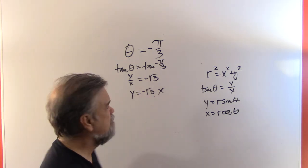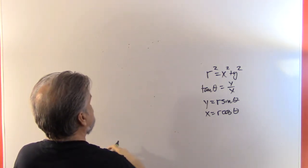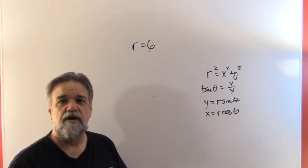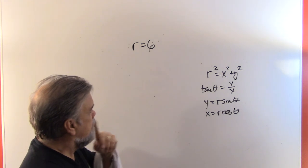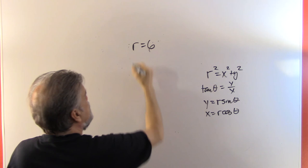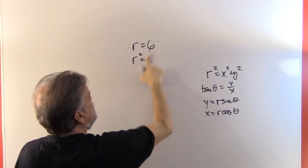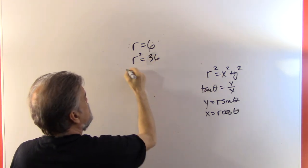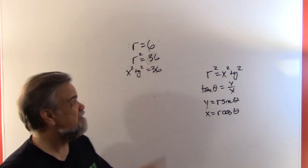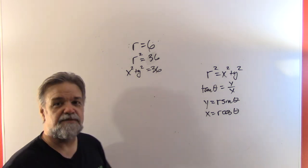And now let's look at the second one: r equals six, which gave us a circle with radius six. I'll just square both sides: r squared equals 36. And since r squared is x squared plus y squared, I get x squared plus y squared equals 36. That is a circle centered at the origin with a radius of six.